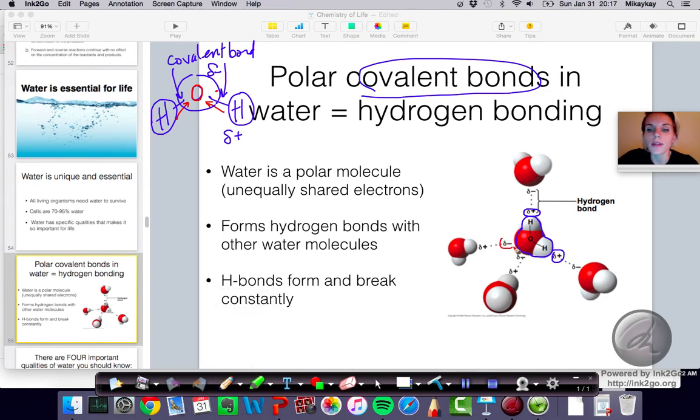What happens, as you know, opposites attract. And so we see on other water molecules that the hydrogens of a different water molecule will be attracted to the oxygen of another water molecule. So we call that attraction a hydrogen bond.